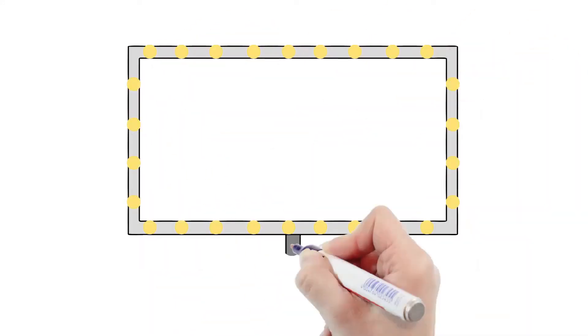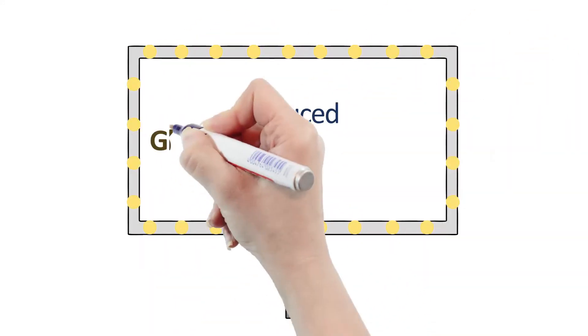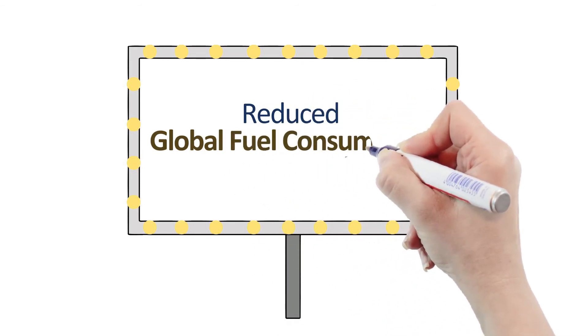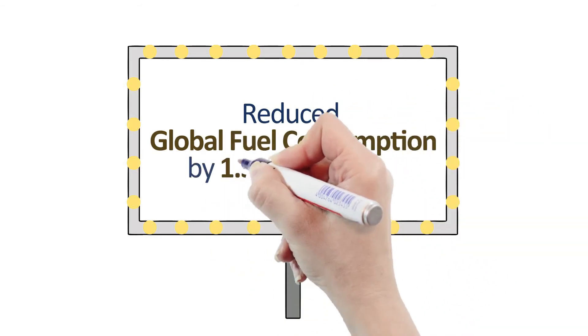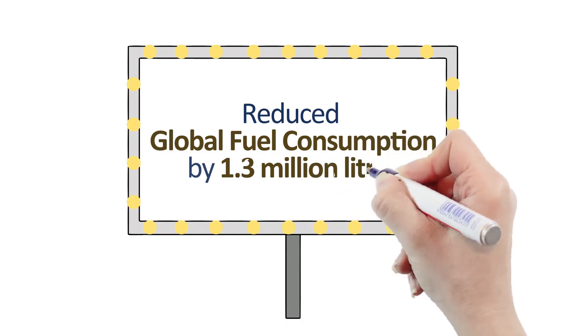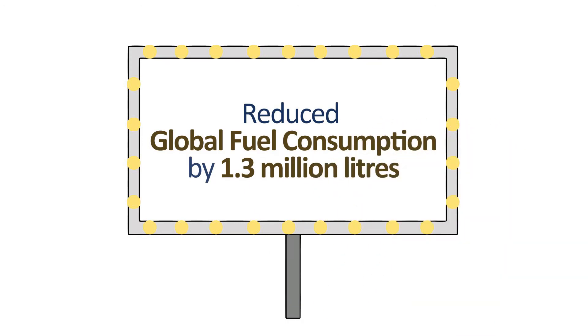So, in all of our efforts to improve fuel efficiency, what are the results? We reduced our fuel consumption by 1.3 million litres or 343,000 gallons. Still some work to do but we're on the right path.